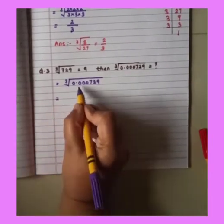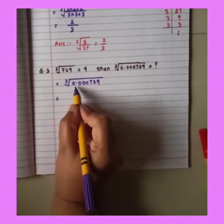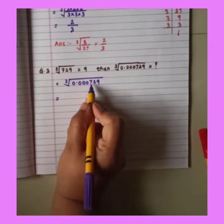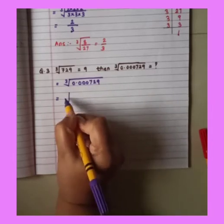So first step we will remove the decimal point. So how we will remove? That means we will convert this decimal number into a fraction form. How it is?